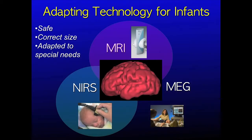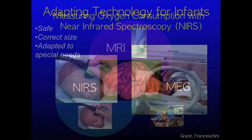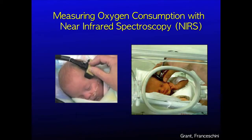The other two modalities we are developing are near infrared spectroscopy and magnetoencephalography. Near infrared spectroscopy is totally safe like ultrasound and can be performed right at the bedside. It provides us with information about cerebral oxygen consumption. Since oxygen is a primary fuel for neurons, this gives us information on regional brain neural activity and neural health.